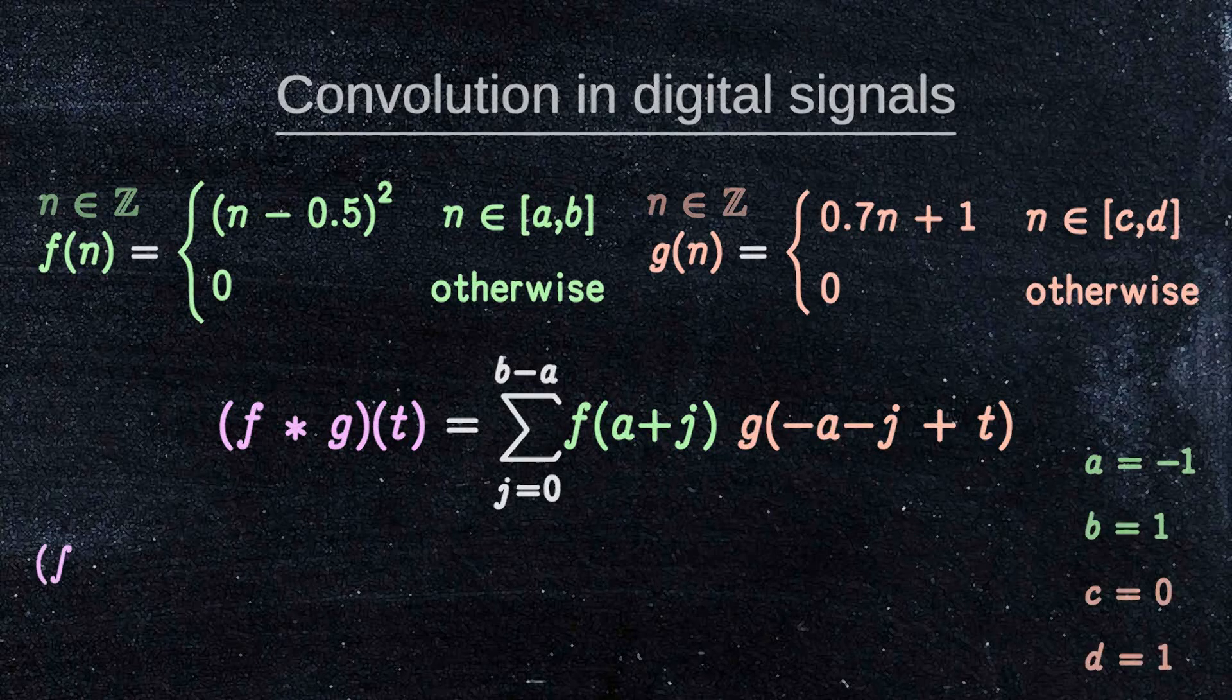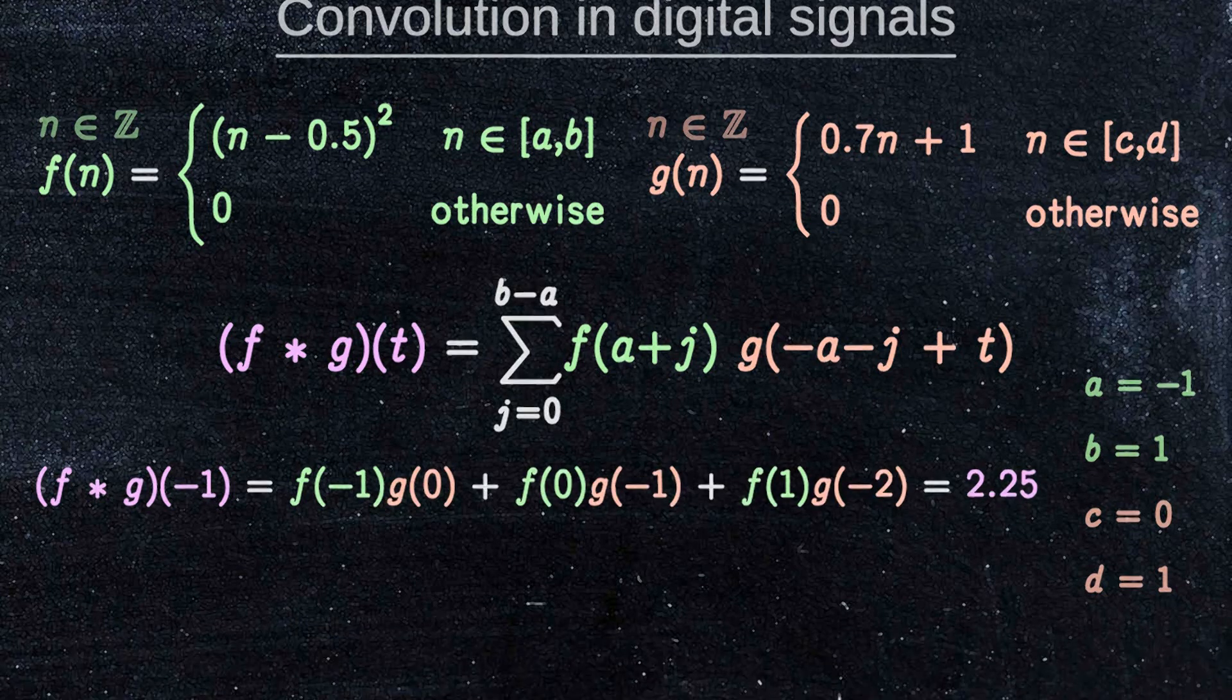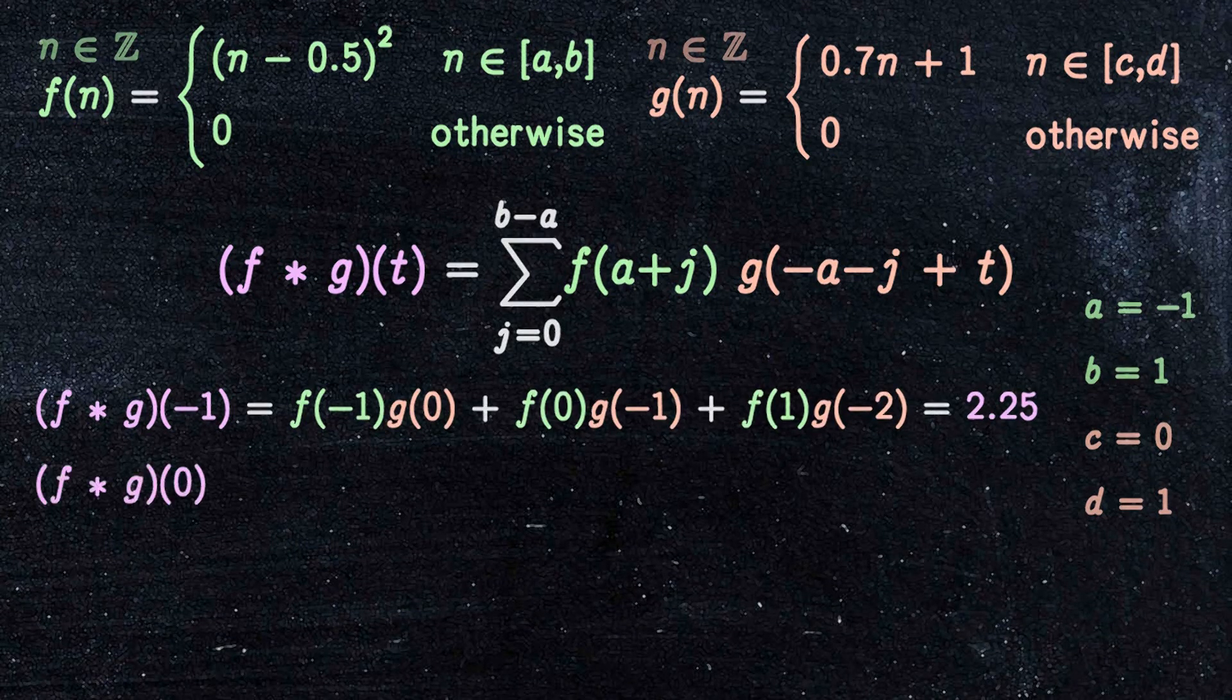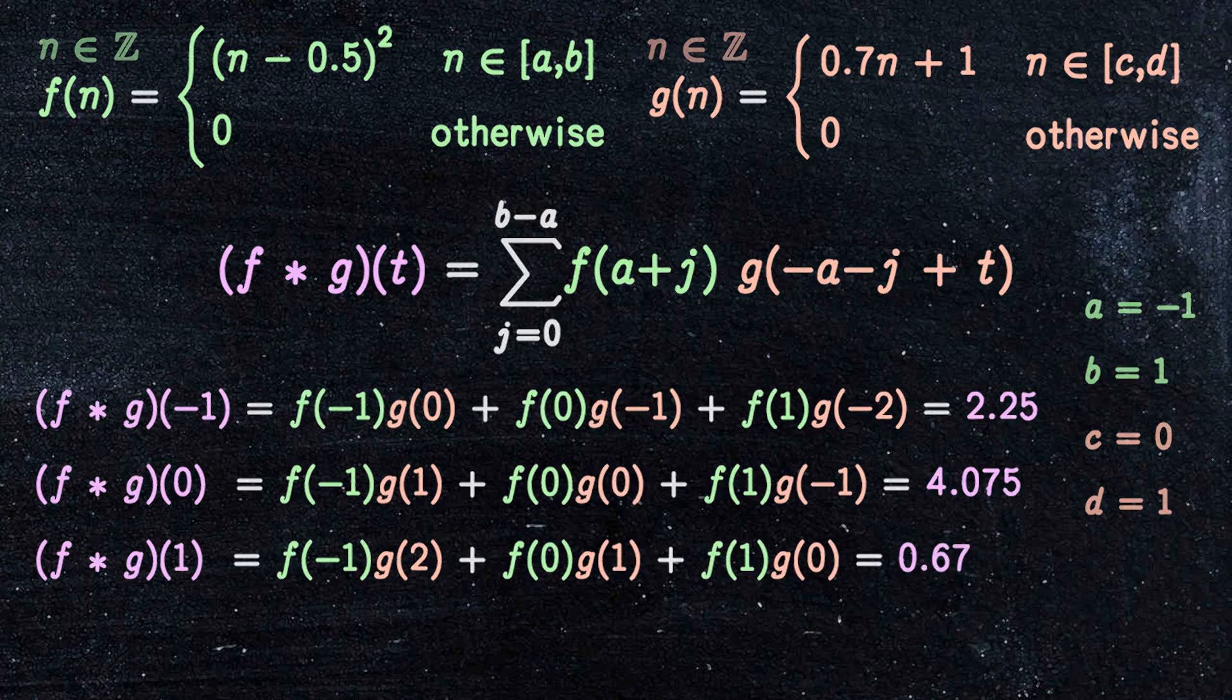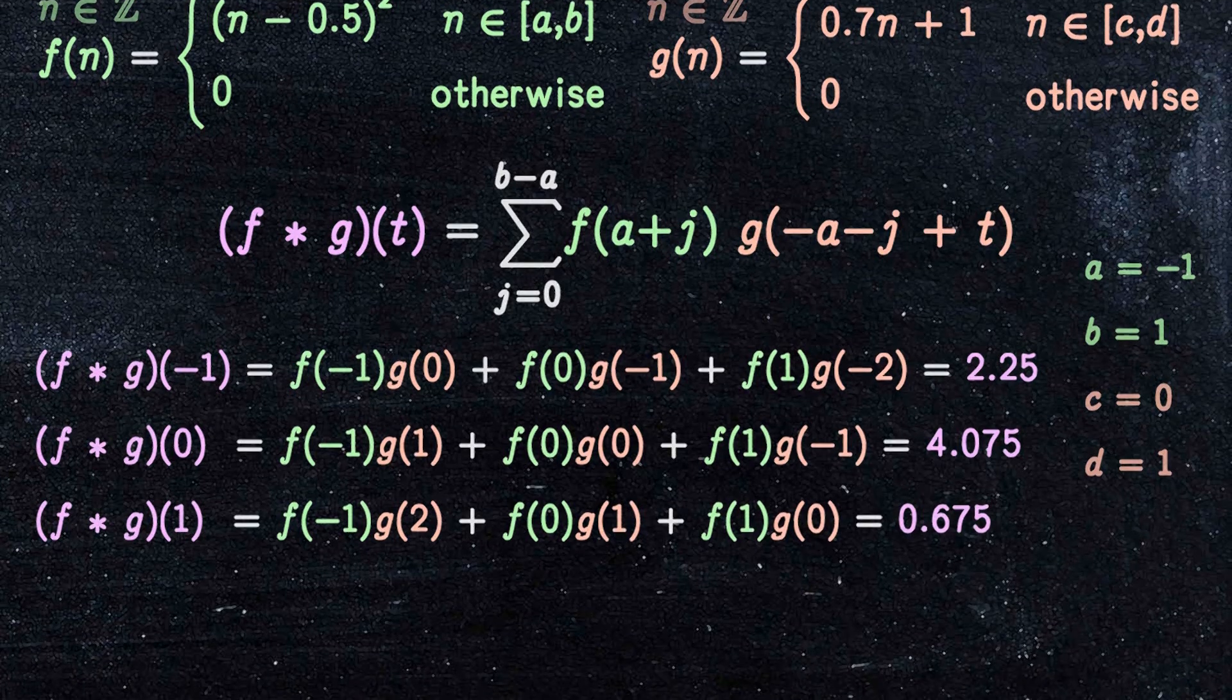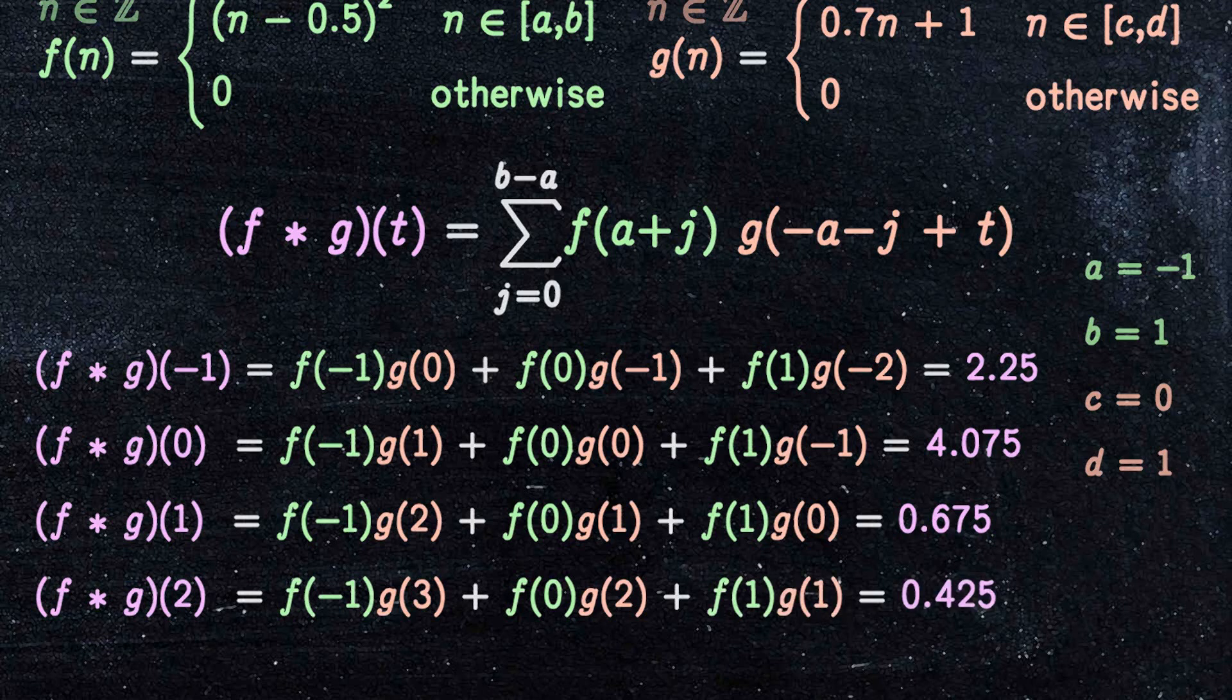The convolution of f and g at t equal to minus one. At t equal to zero. At t equal to one. And finally, at t equal to two. Outside of these values, the convolution is zero.